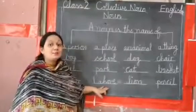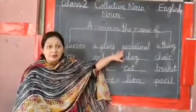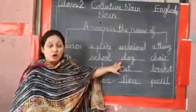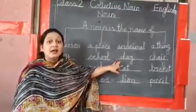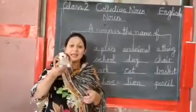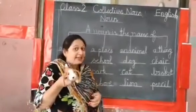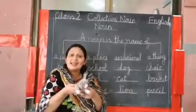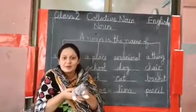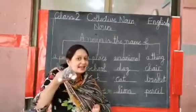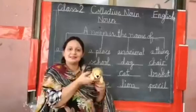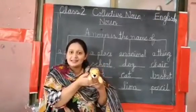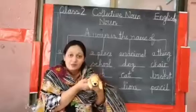An animal. A dog — dog is an animal. So dog is an animal. Cat is an animal. Very good. Cat is an animal. Lion is an animal.